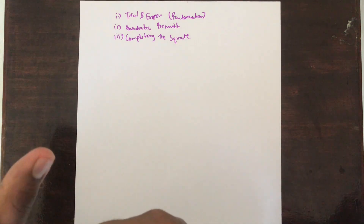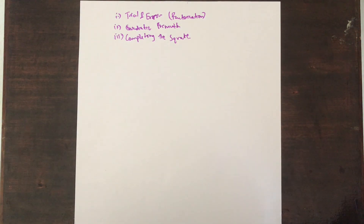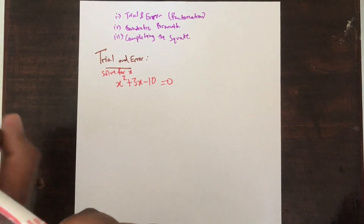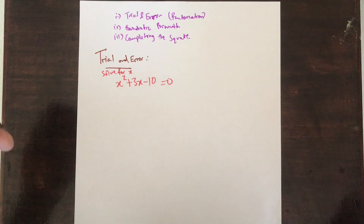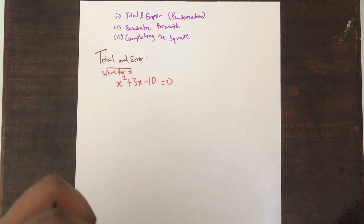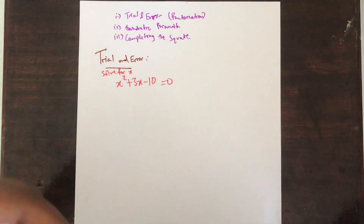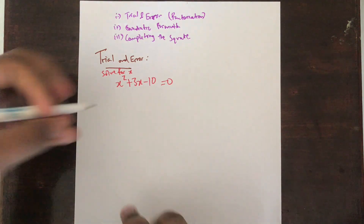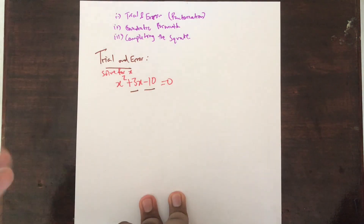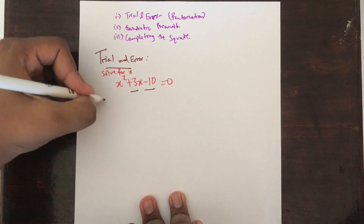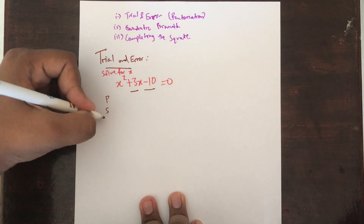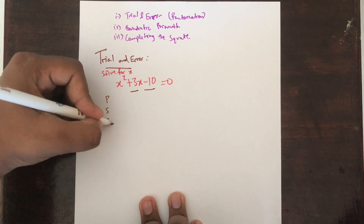Let's start with the trial and error, or the factorization method. We will be looking at x squared plus 3x minus 10 equals 0, and we are asked to solve for x. Using the factorization method, you need to get 2 factors which multiply to give minus 10 and add up to give plus 3. This is the PSF method: P stands for product, S stands for sum, and F stands for the factors.